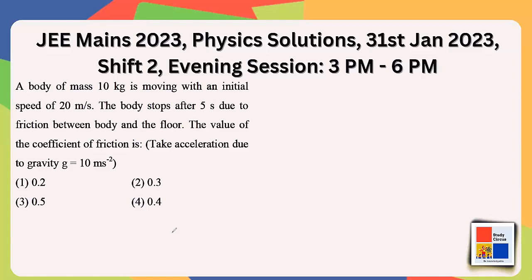This question says a body of mass 10 kilograms is moving with an initial speed of 20 m/s. It stops after 5 seconds due to friction. We have to find the friction coefficient — specifically the kinetic friction coefficient.